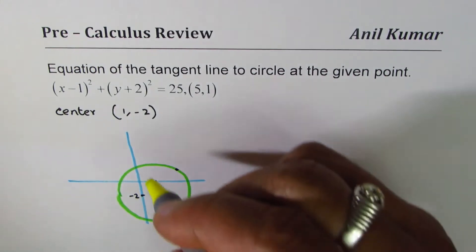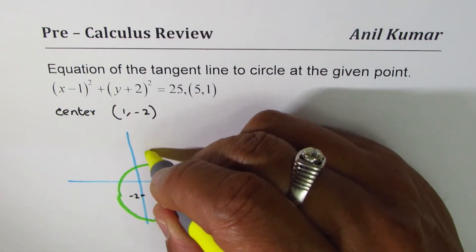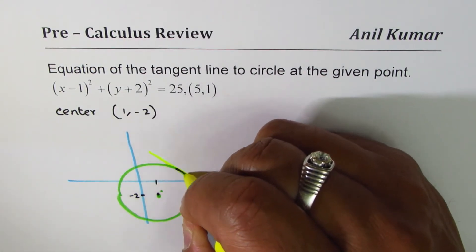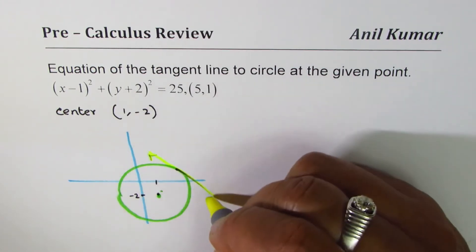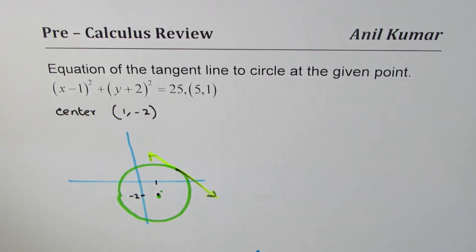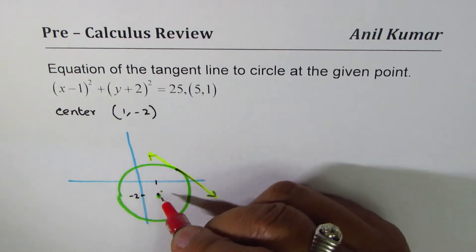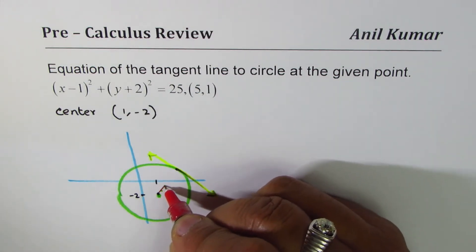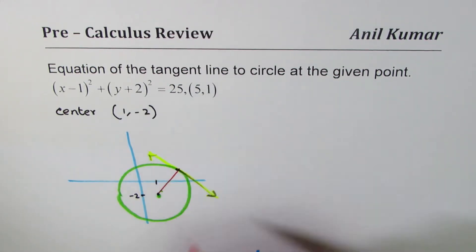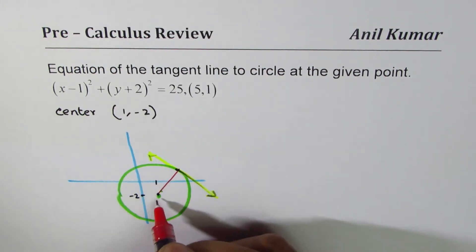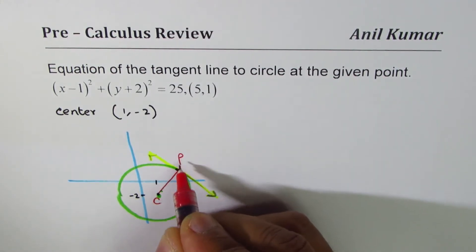We need to find the equation of a tangent line. So it'd be kind of like this. So I hope this sketch gives you an idea of what the situation is. To find the equation of the tangent line, we need to connect the center. Let's say the center is C with the point P.